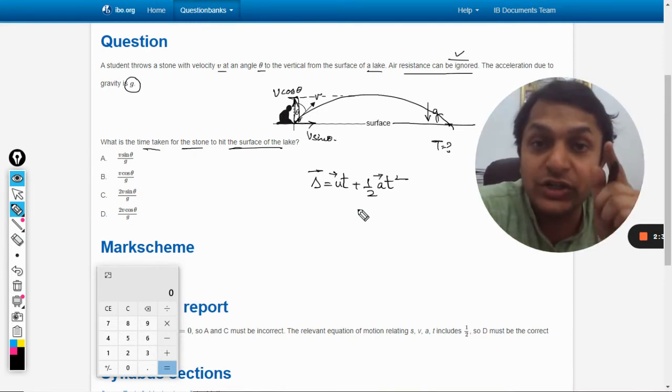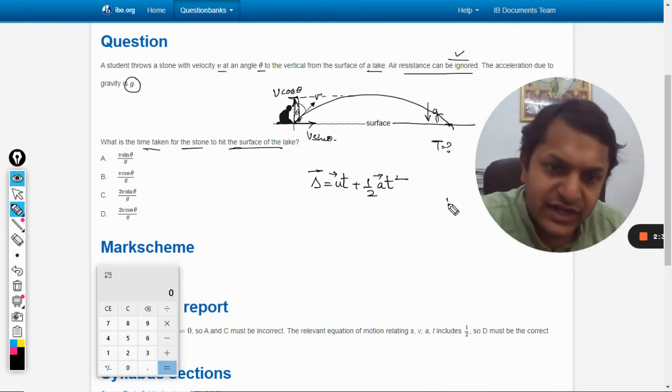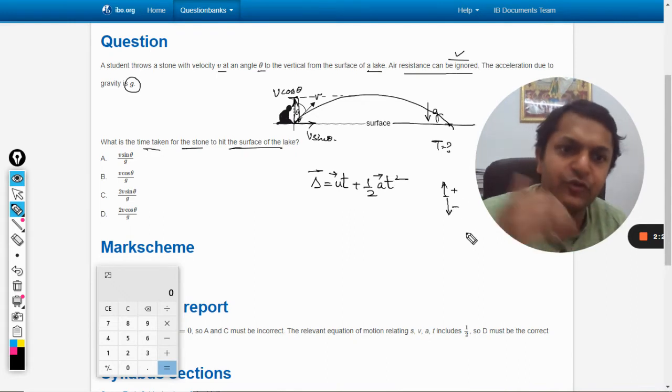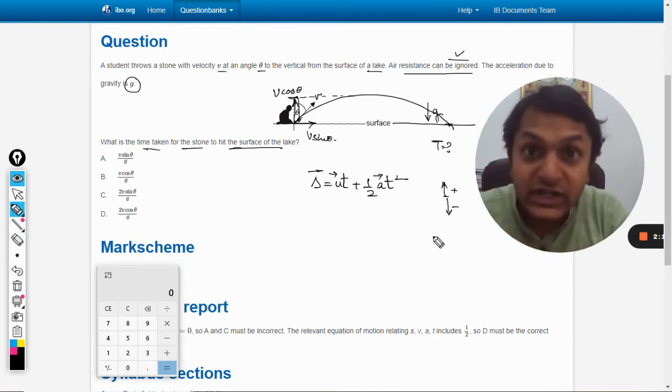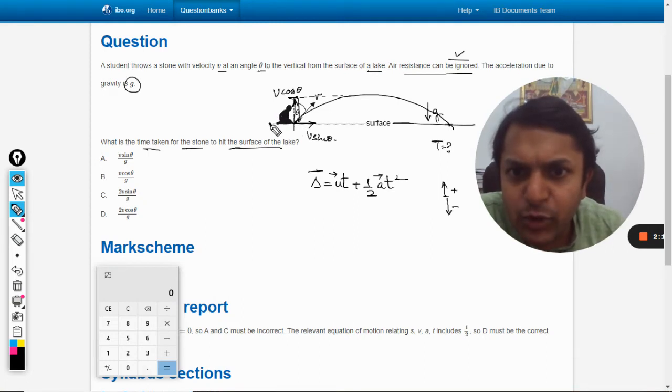It means we need to assign a direction—which direction is taken as positive and which is taken as negative. Let us say downward is taken as negative and upward is taken as positive. Now we will just apply the formula here only for the vertical version, neglecting the horizontal one.